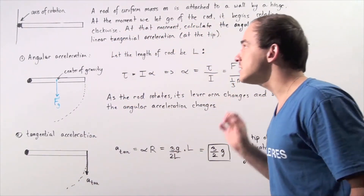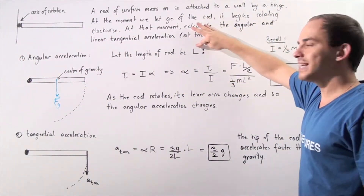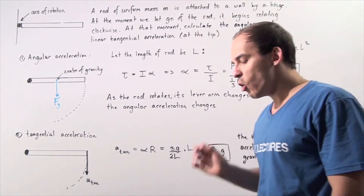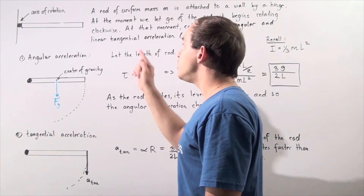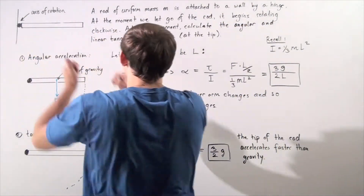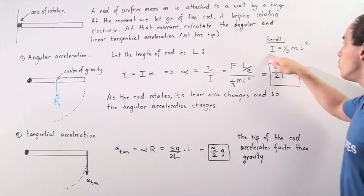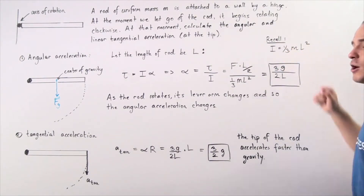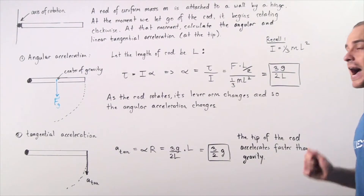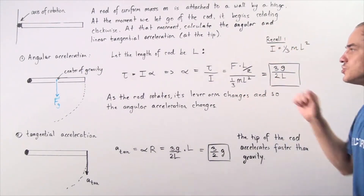Let's make the assumption that the entire length of our rod is given by the capital letter L. Recall what the moment of inertia of a uniformly massed rod is. If our distance is L and the mass is M, then the moment of inertia is equal to one third multiplied by the mass multiplied by the square of our distance, L squared. We're going to need to use this in just a moment.